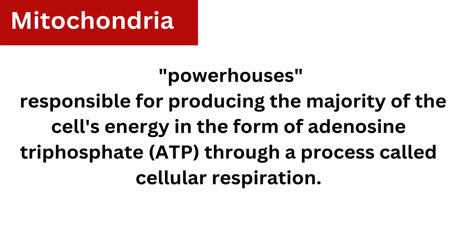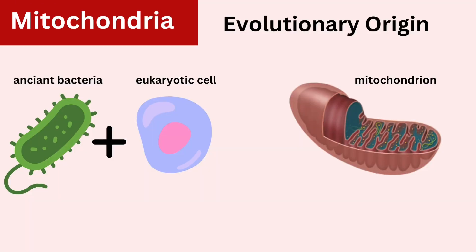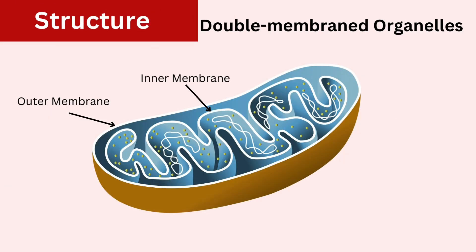ATP is produced through a process called cellular respiration. Mitochondria are believed to have originated from ancient symbiotic bacteria that were engulfed by ancestral eukaryotic cells billions of years ago. This symbiotic relationship eventually evolved into the mutually beneficial associations seen in modern eukaryotic cells.